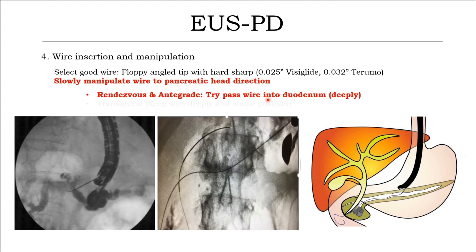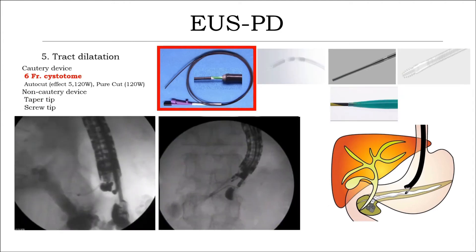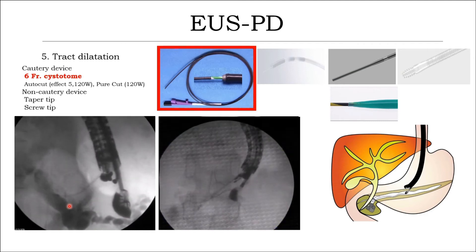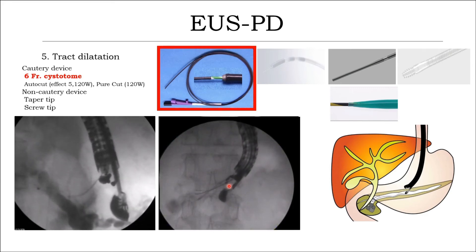Follow the guidewire with the dilator and try to pass the guidewire into the duodenum deeply. Step 5: tract dilation. The sequential dilation system is preferred, but sometimes multiple dilation devices are required for the tract because pancreatic parenchyma is very hard due to chronic pancreatitis. This example shows tract dilation with a cystotome and needle-knife. Sometimes combined dilation is needed — as you can see, the pancreatic parenchyma from chronic pancreatitis is very hard.